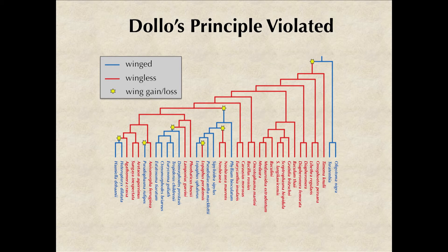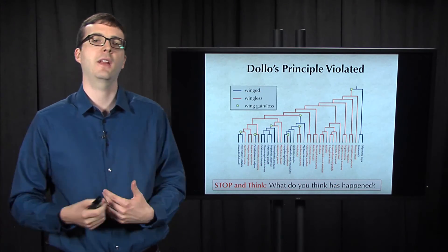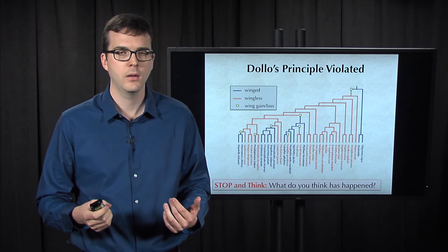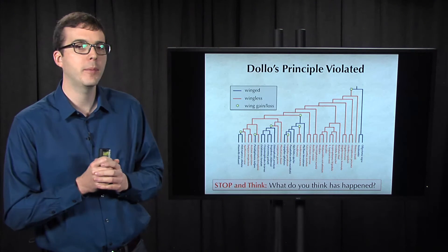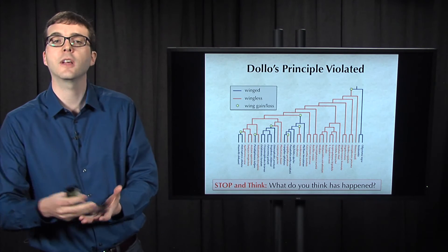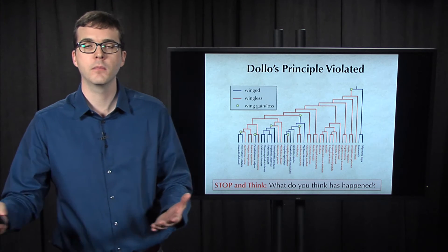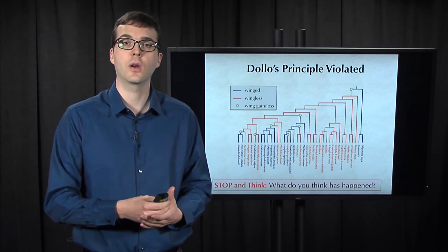When we zoom out and construct a phylogeny of all insects, we see that wings have been gained or lost hundreds of times. This may seem like a mystery, but what's going on is that evolution isn't reinventing the wings from scratch. The pathways needed for flight aren't being eliminated completely by eroding into pseudogenes — they're just being used for something else in wingless species, then getting turned back on when needed in a winged species to accommodate flight.